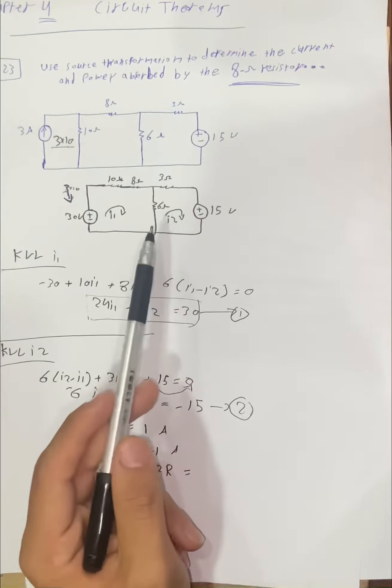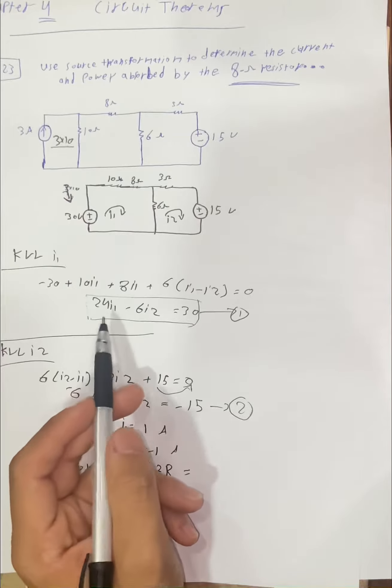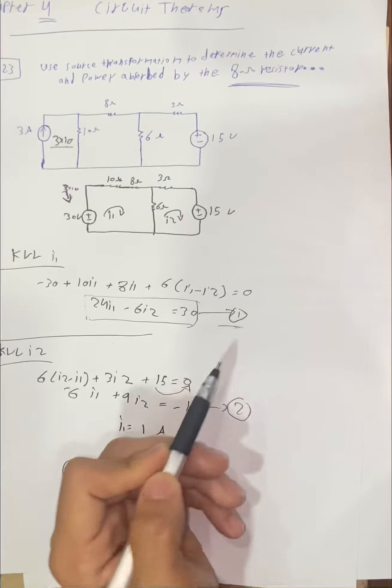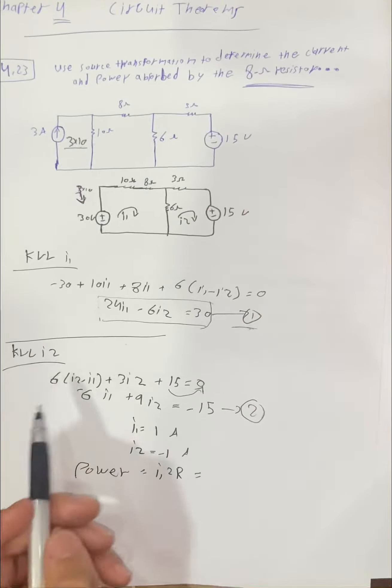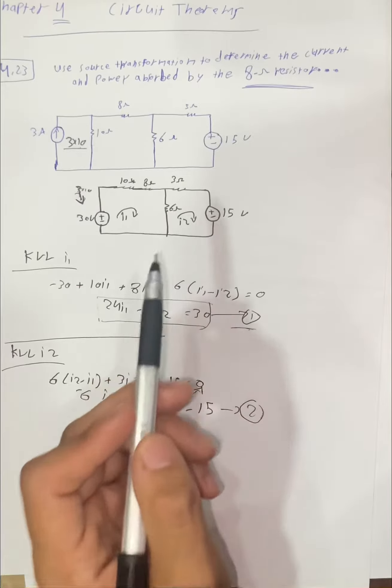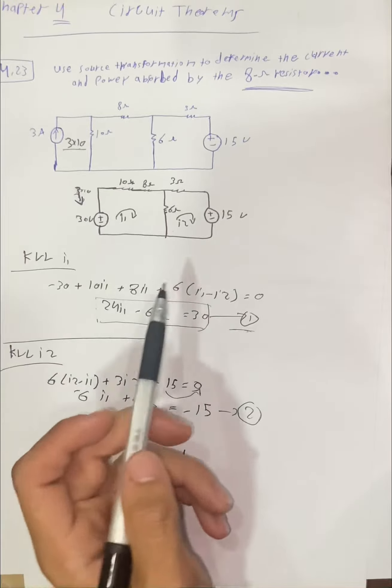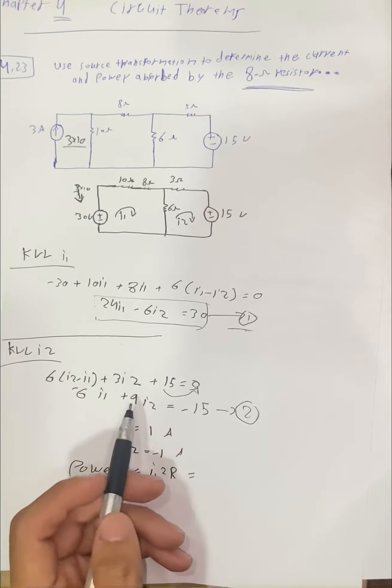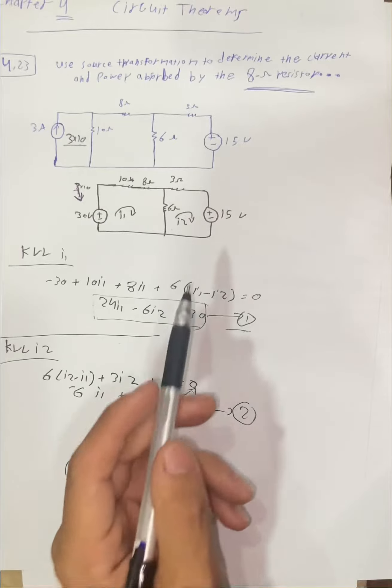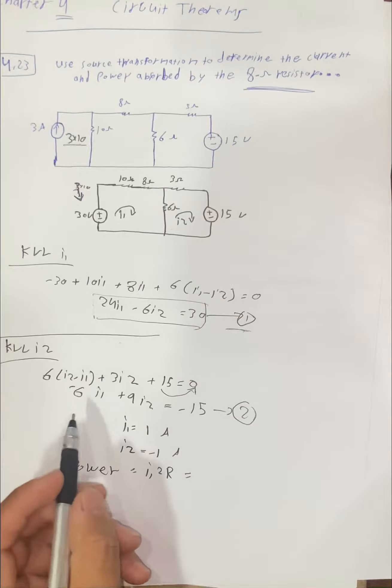Okay, that will be the equation, this is number one. Now at the second voltage loop, I2, the loop number two: 6i1i2 plus 3i2 plus 50 voltage. The equation will be like this.